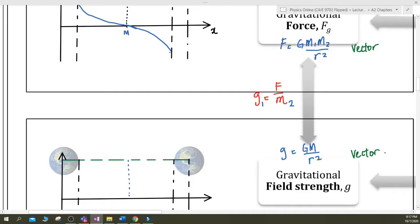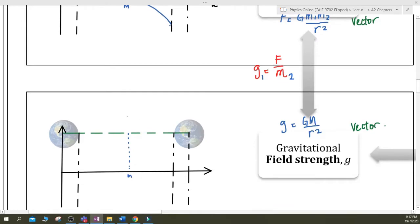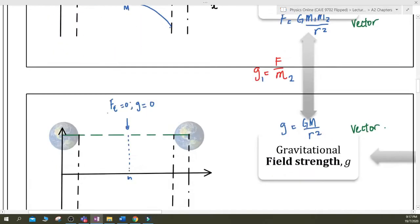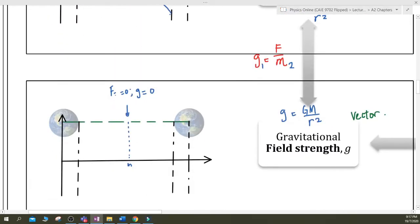Alright. So if the gravitational force have that shape, then the gravitational field strength should also have the shape. So when the middle or the net force is zero, so then the gravitational field strength should also be zero. You will get the exact same shape. But of course the magnitudes will be different because you are dealing with a different equation.